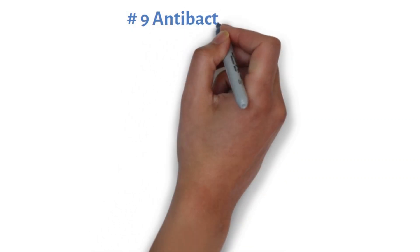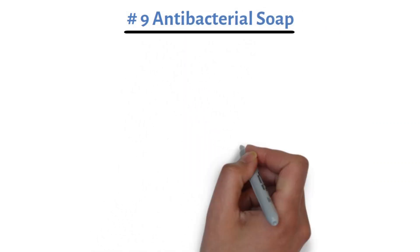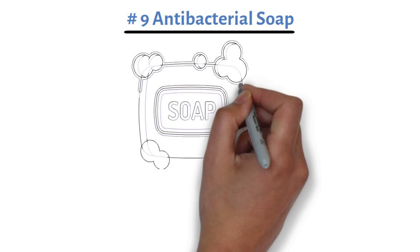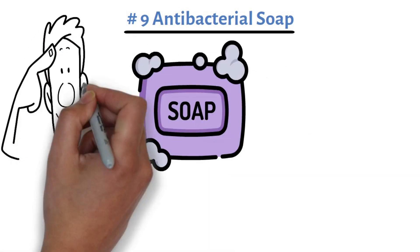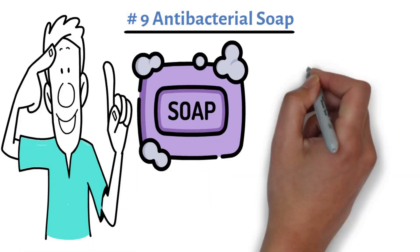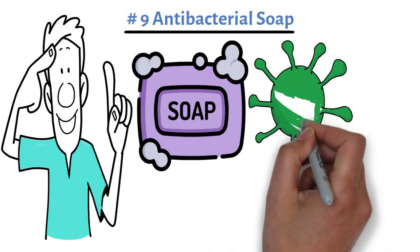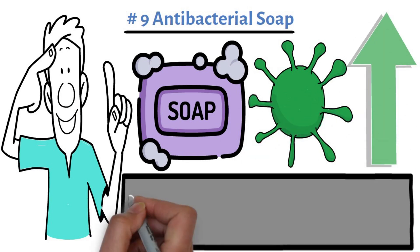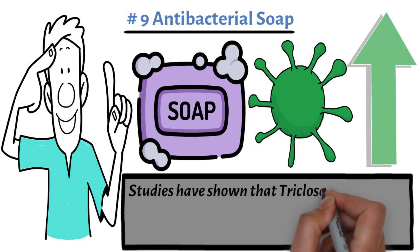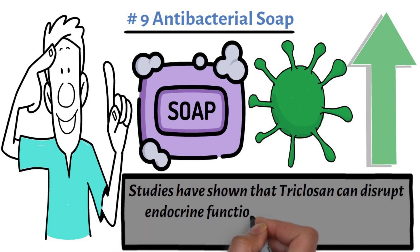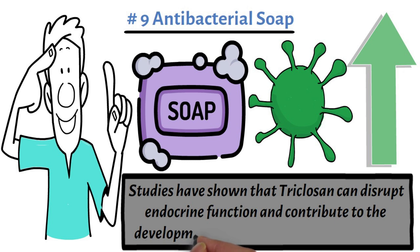Product number nine, antibacterial soap. Antibacterial soaps often contain triclosan, which can interfere with hormones, encourage the growth of drug-resistant bacteria, and increase cancer risks. Studies have shown that triclosan can disrupt endocrine function and contribute to the development of antibiotic-resistant bacteria.